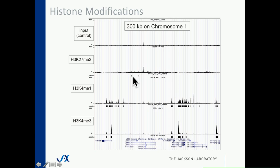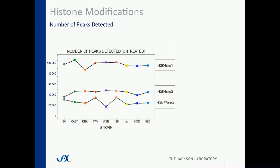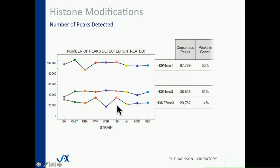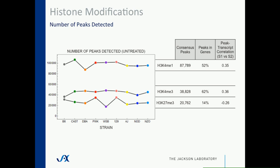We call quite a few peaks in every strain in the untreated condition: about 100,000 K4 monomethyl marks, about 40,000 K4 trimethyl, and about 30,000 K27 trimethyl. Looking across the genome at consensus peak loci, about half of the K4 monomethyl marks are within a gene, almost two-thirds of the trimethyl marks are within a gene or overlapping a promoter or start site, and fewer K27 trimethyl marks — a known repressor mark — are within the gene. The correlation between transcript level and these marks shows a positive correlation for K4 methyl marks and a negative correlation for K27 trimethyl, consistent with their known activator and repressor roles.